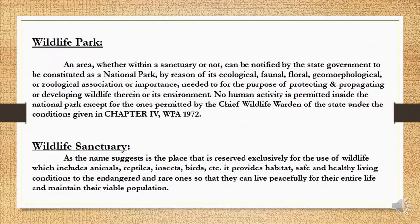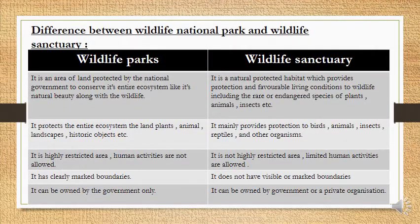Now let's see what is the difference between Wildlife National Park and Wildlife Sanctuary. A Wildlife Park is an area of land protected by the national government to conserve its entire ecosystem, including its natural beauty along with the wildlife. A Wildlife Sanctuary is a natural protected habitat which provides protection and favorable living conditions to wildlife, including rare or endangered species of plants, animals, insects, etc.